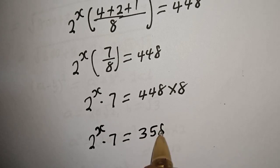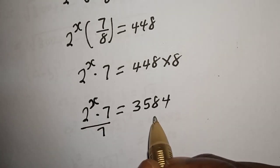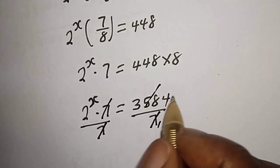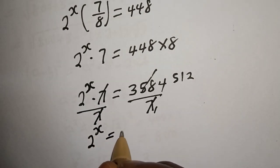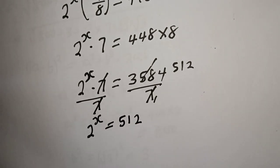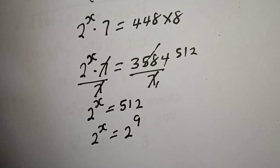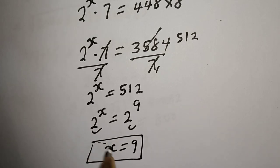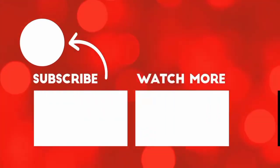448 times 8 is 3584. Dividing both sides by 7: 3584 divided by 7 gives 512. So 2 raised to power s is equal to 512, which is 2 raised to power 9. We have the same base 2, therefore s is equal to 9. This is the final answer. Before you leave — like, share, comment, and subscribe. Thank you, bye bye.